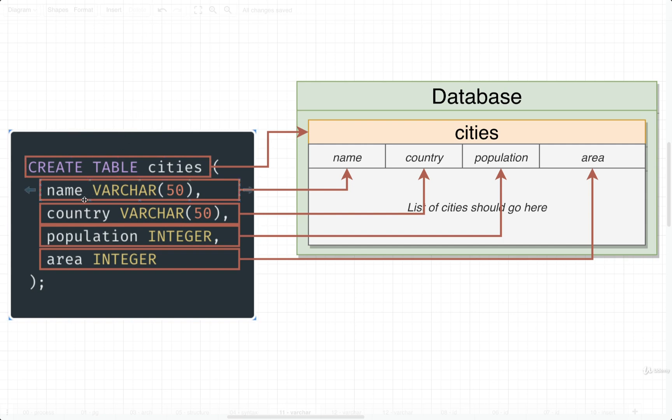In total, we said that we wanted four different columns: name, country, population, and area. Then right after each of these different column names, we listed out the type of data that would be stored inside of that column.